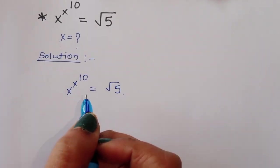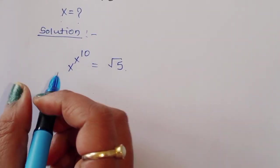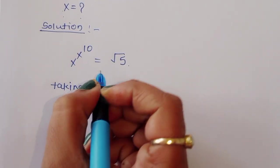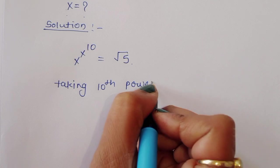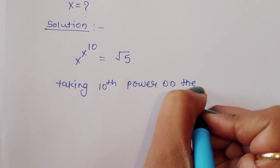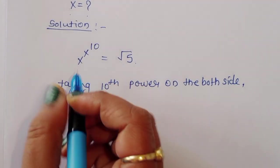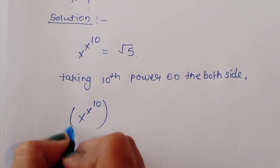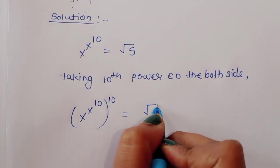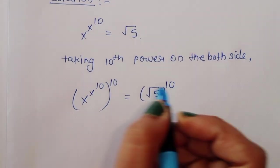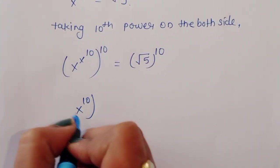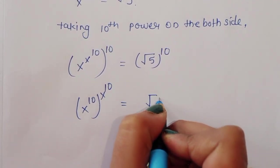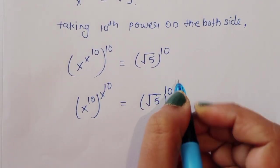Taking the tenth power on both sides, we get x power (x power 10), all raised to the power 10, is equal to the square root of 5 raised to the power 10. We can write this as x power (10 times x power 10) is equal to square root of 5 raised to the power 10.